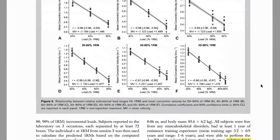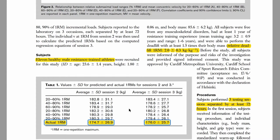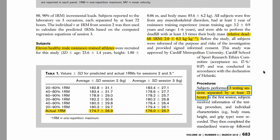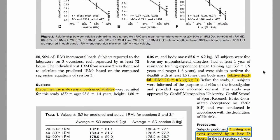To do so we recruited 11 resistance trained athletes with an actual 1RM in deadlift of 175kg, which was exactly 2.0 times their relative body weight. Every participant came in for 3 different occasions and performed on every occasion 1 1RM assessment.